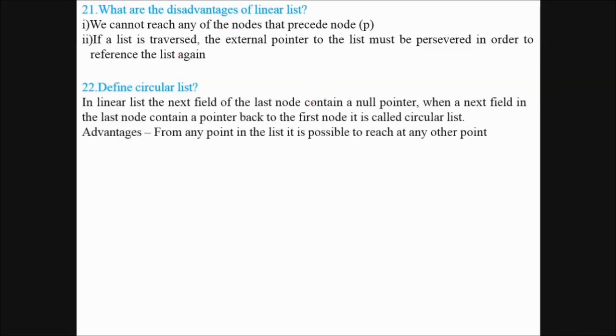Define circular list. In linear list, the next field to the last node contains a null pointer, where the next field in the last node contains a pointer back to the first node. This is called a circular list. The advantages: from any point in the list, it is possible to reach any other point.